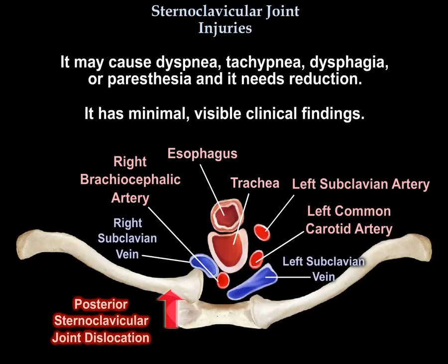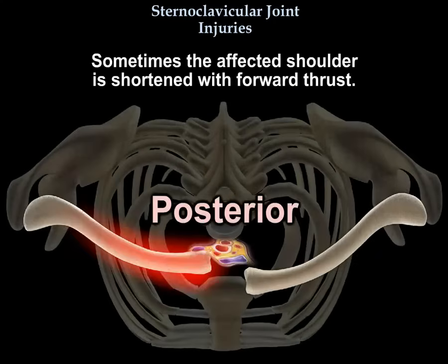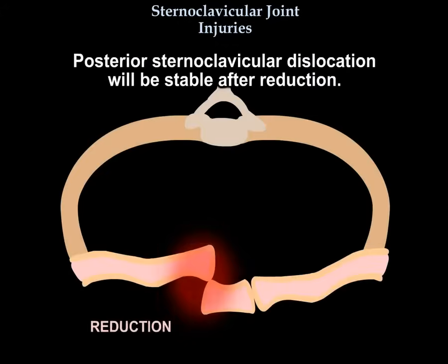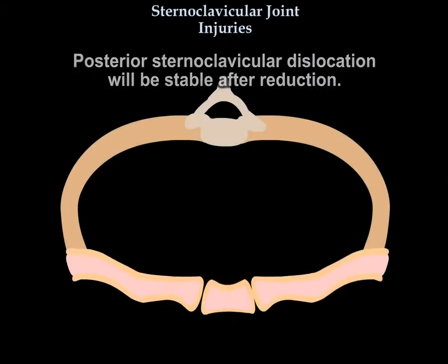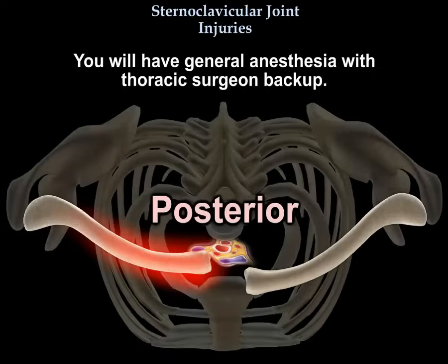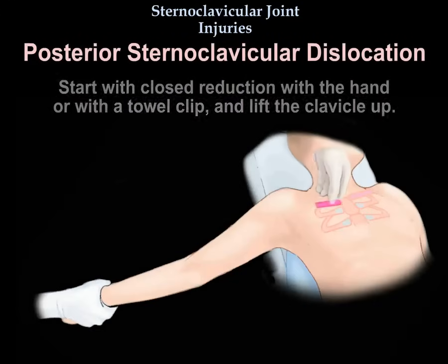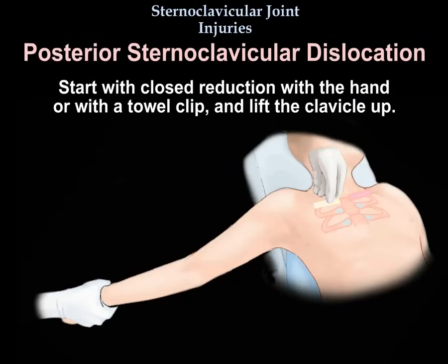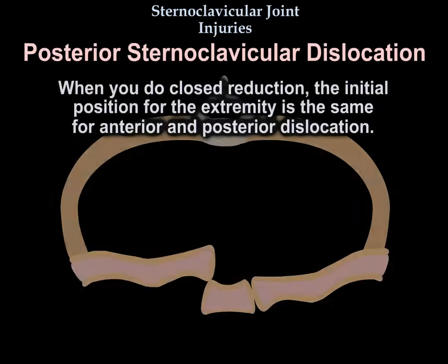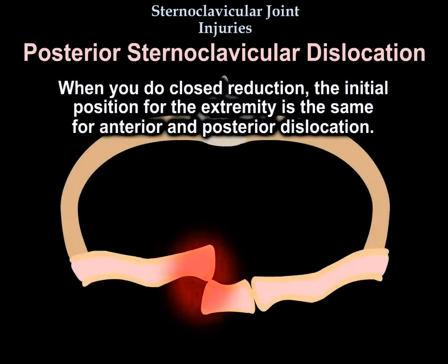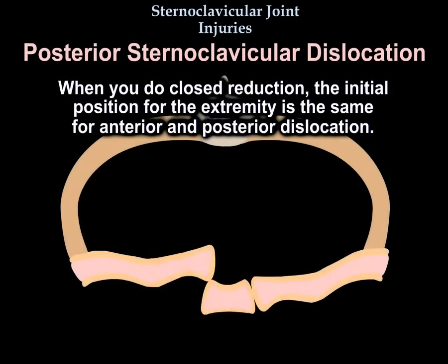Posterior dislocation has minimal visible clinical findings. Sometimes the affected shoulder is shortened with forward thrust. For reduction, you will use general anesthesia with a thoracic surgeon on backup. Start with closed reduction using the hand or a towel clip to lift the clavicle up. The initial position for the extremity is the same for both anterior and posterior dislocation.